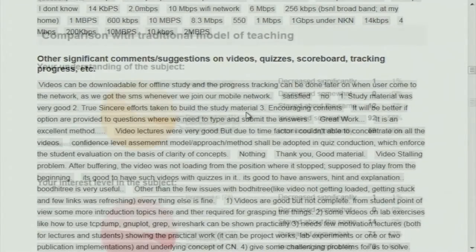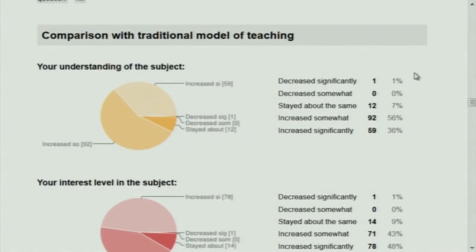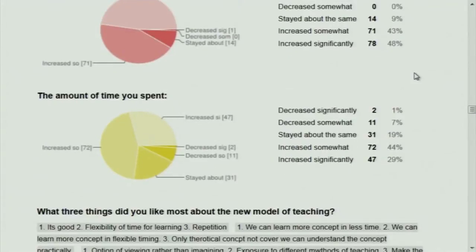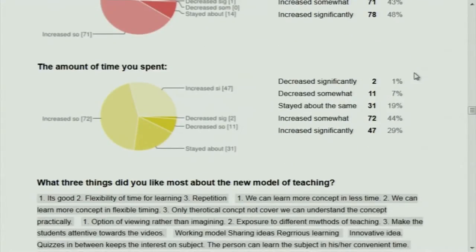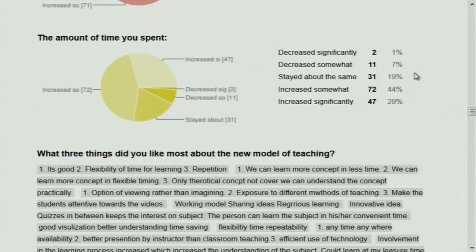This is the network speed. This is very interesting — there was a participant who seems to have decreased in what they understood. This question was meant for my students who had no knowledge of computer networks. But you being computer network instructors, you don't want to see that you came for a workshop and forgot what computer network concepts are. Interest levels seem to be mostly increased. Amount of time spent also seems to be a good amount for most of them.